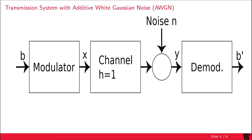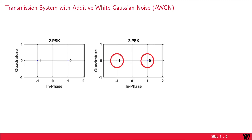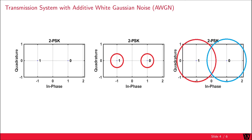Our receiver now tries to demodulate the signal from Y to B'. In the case of BPSK modulation, we add some noise on top of these symbols. If the noise is small enough, we have no problem detecting the right symbol. However, if the noise level gets larger, we run into trouble distinguishing between those symbols.